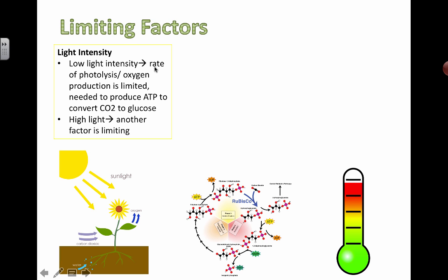At low light intensities, you're really limiting the rate of photolysis, which is the process of splitting water into oxygen and hydrogen. If you slow down photolysis, that's exactly where your oxygen is coming from, so your oxygen production is going to be limited. As you increase the light intensities, you're going to allow for more photolysis to actually happen and therefore more ATP is made. That ATP can then be used to convert carbon dioxide to glucose. At really high light intensities, one of these other factors is going to become the limiting factor.